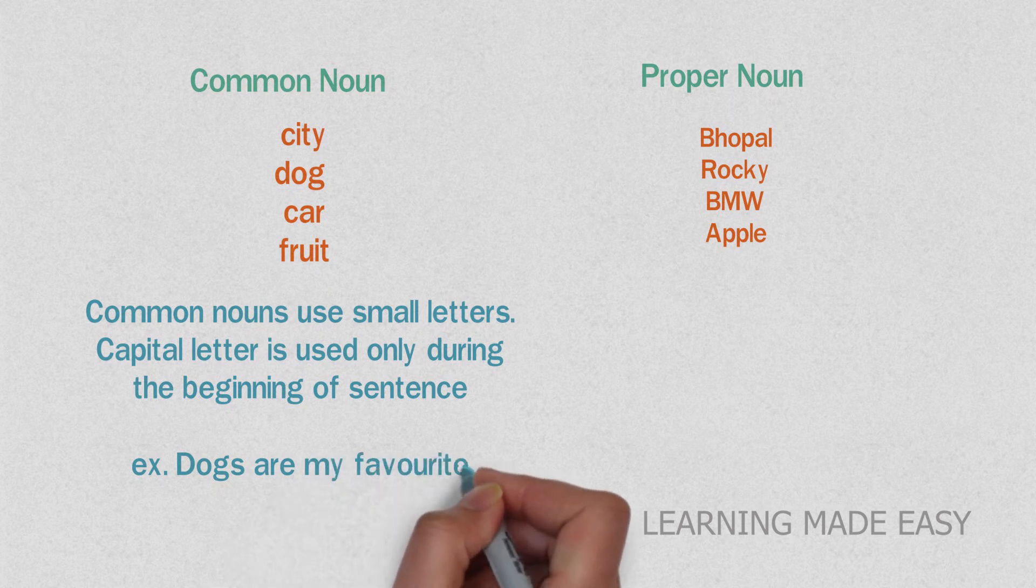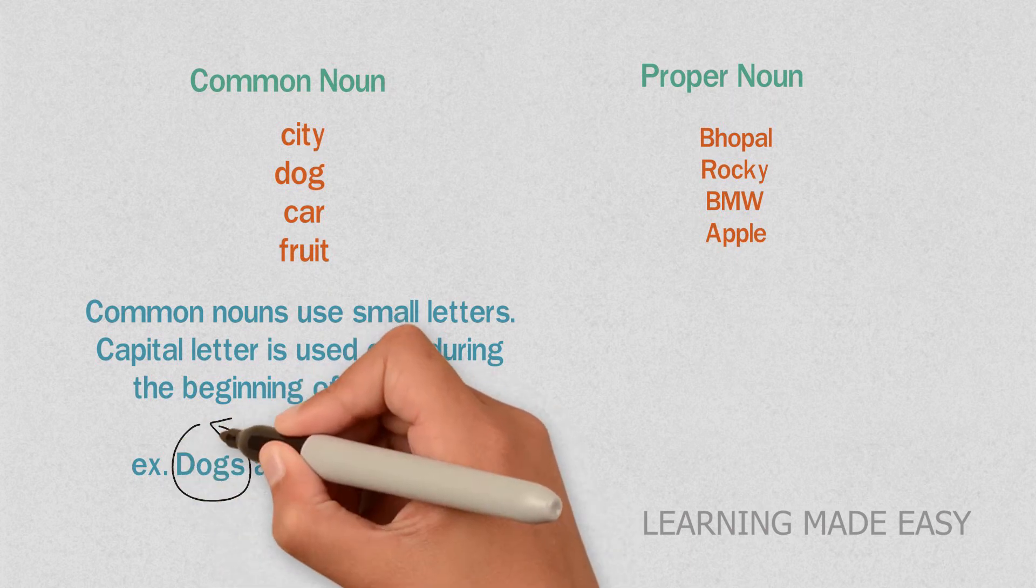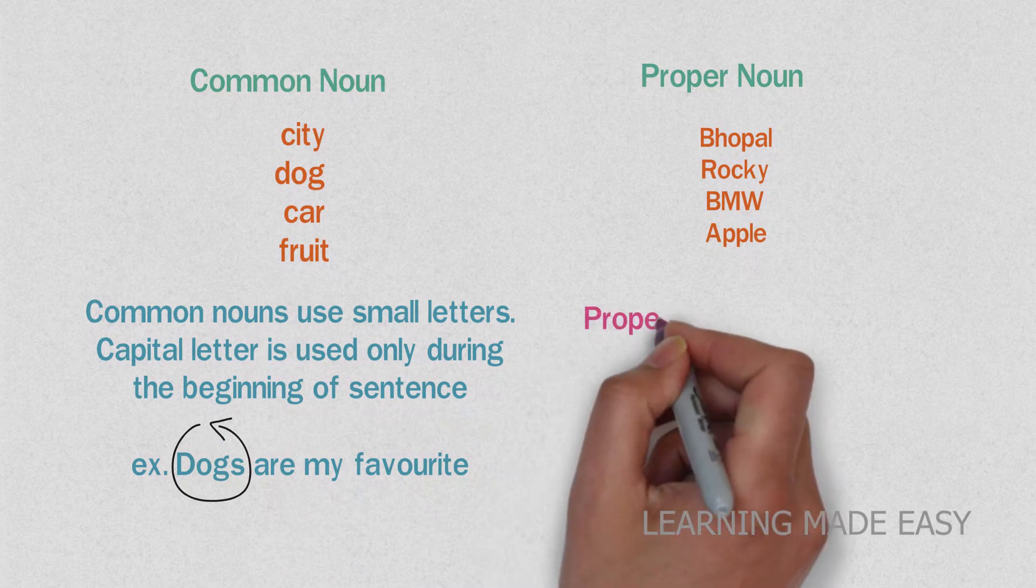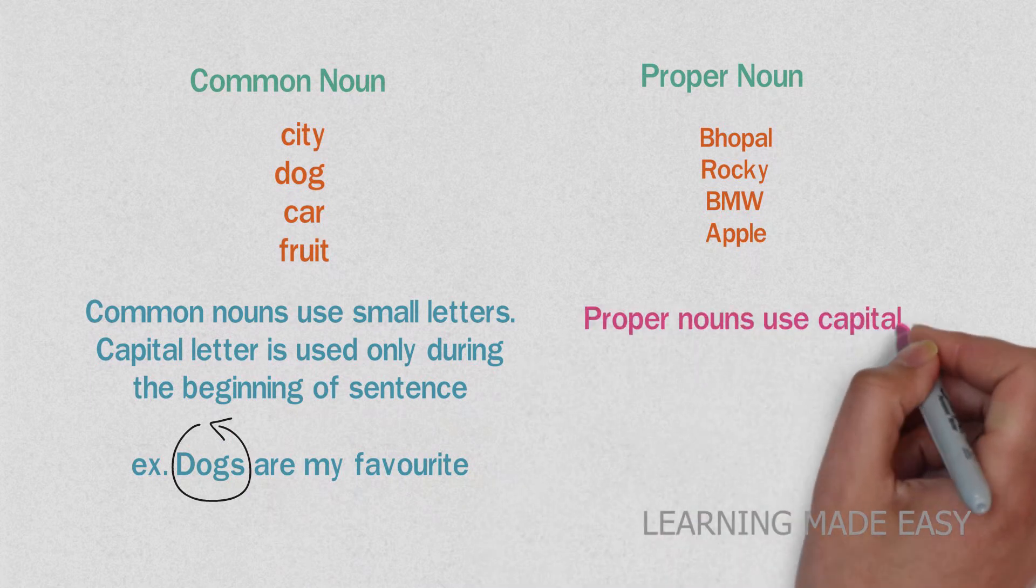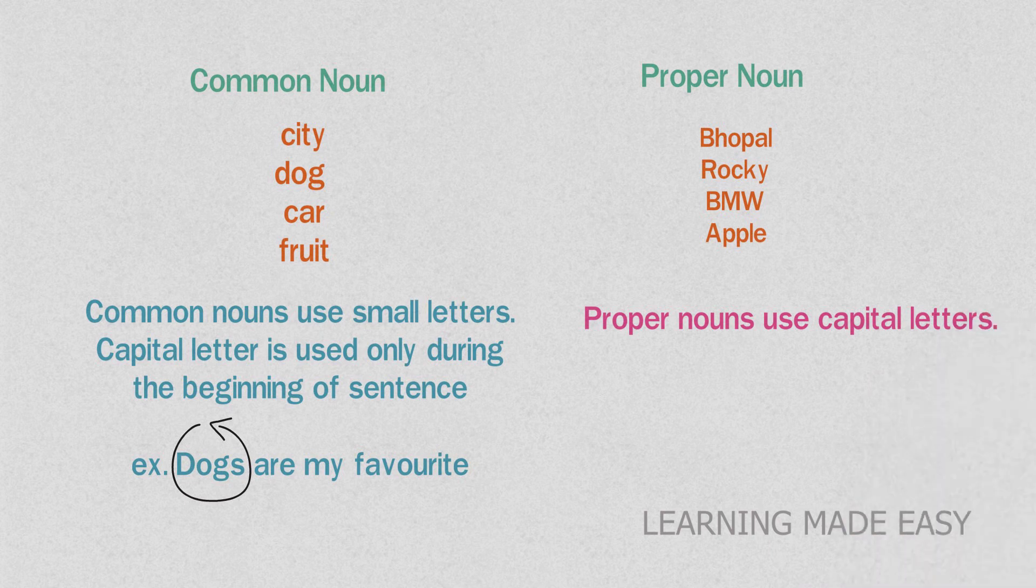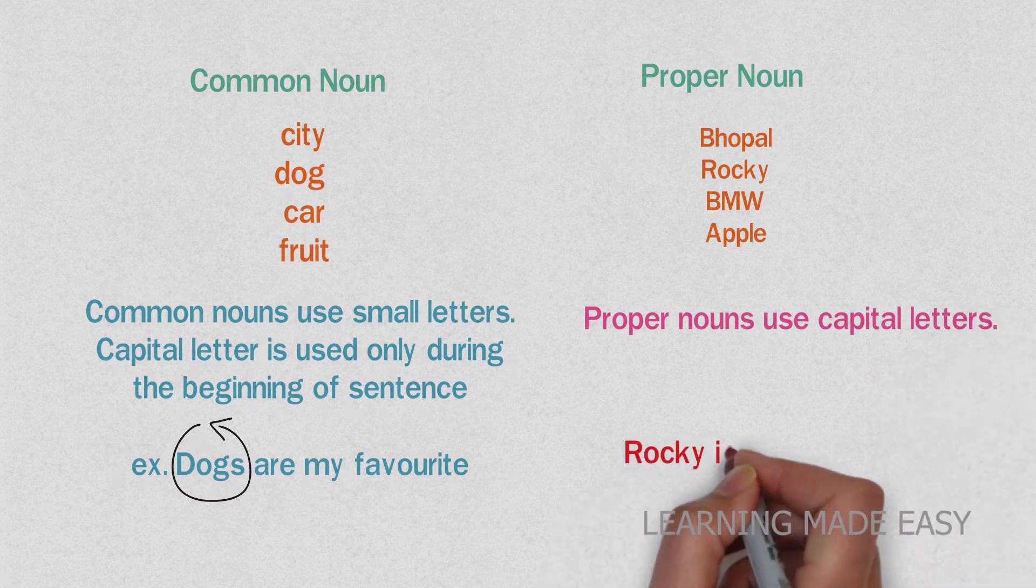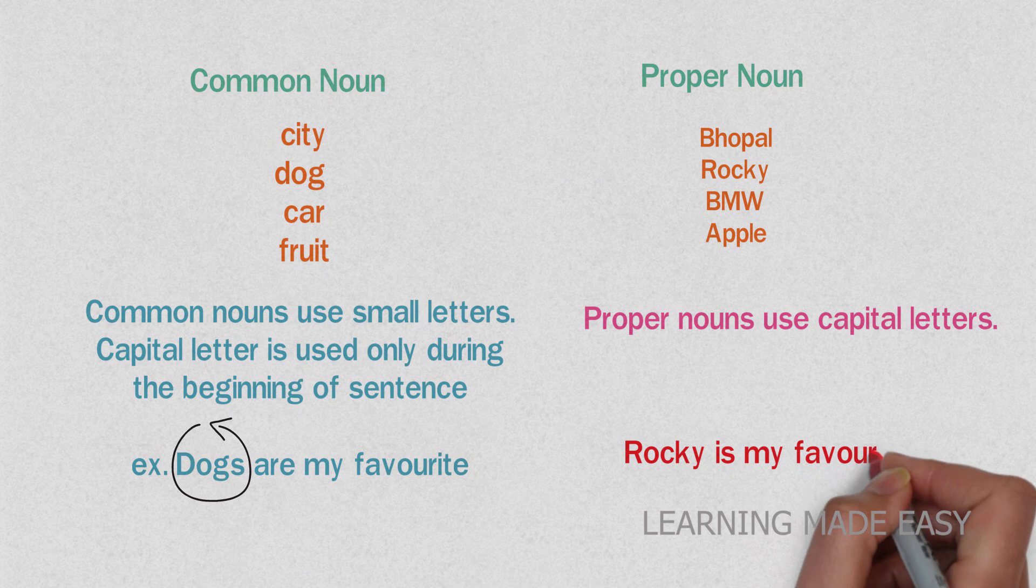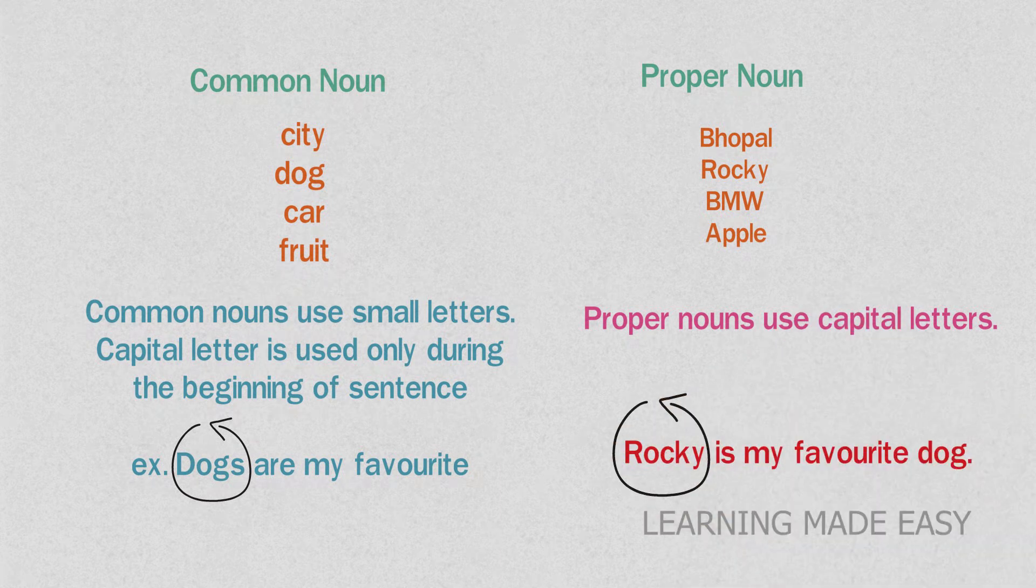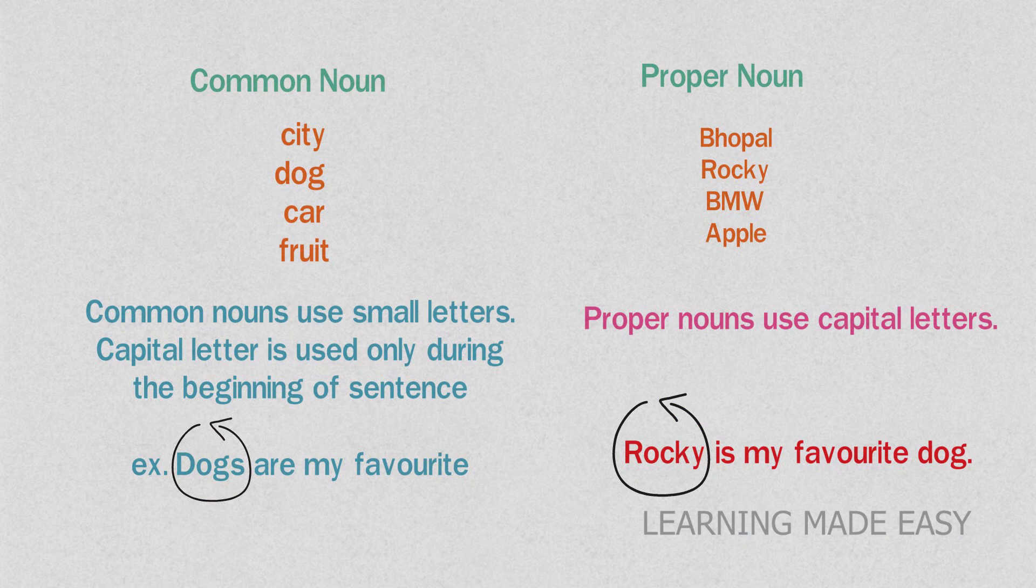Example: dogs are my favorite. When you use common noun at the beginning of a sentence, we start with a capital letter. When you come to the proper noun, proper nouns use capital letters. Example: Rocky is my favorite dog. Here the name of the dog is specific. The dog is Rocky, so we say Rocky is my favorite dog.